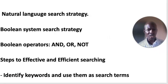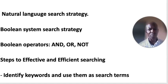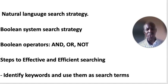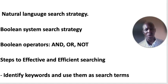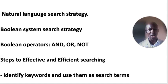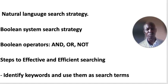To search a search engine or an academic database, you really need to plan your search using any of the available search strategies. We have the natural language search strategy and we have the Boolean system search strategy. For natural language you just put in all your search terms in the search engine — for example in Google you type in all your words and Google will give you websites where you can get your information. For Boolean system you use Boolean operators, using your keywords and combining them with those operators.